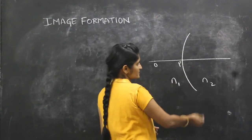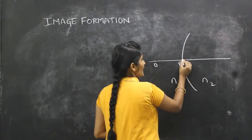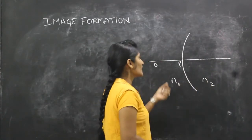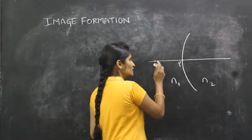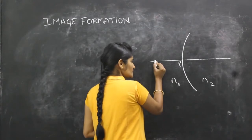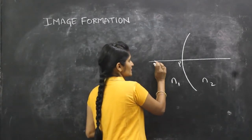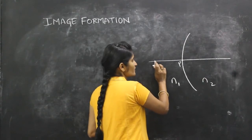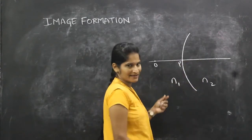This is the curved surface and this is the point called the pole. I am considering a principal axis. Now I am placing a point object at O. The rays which are coming from O — the first ray will be travelling along the principal axis.